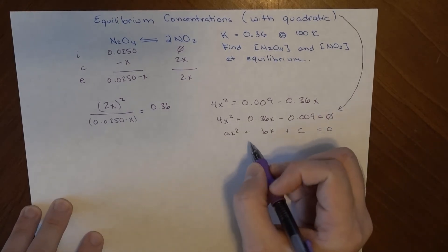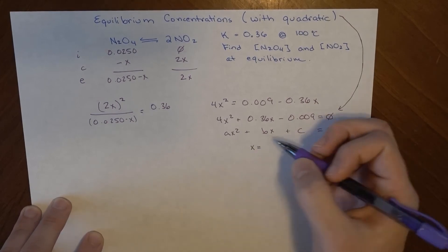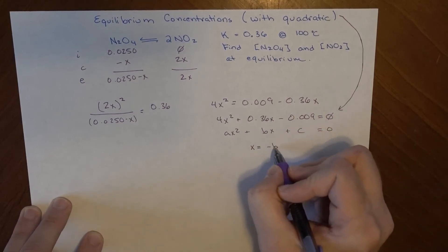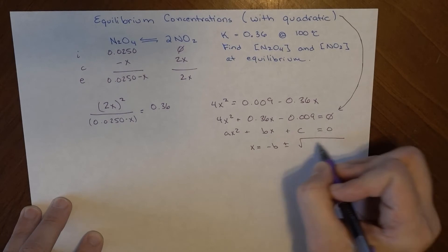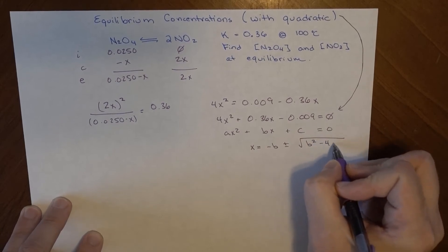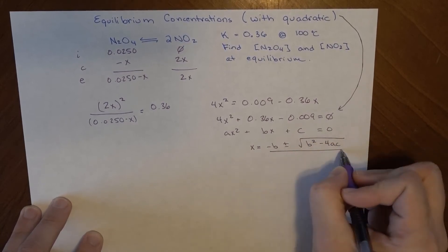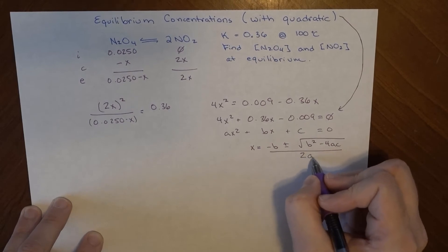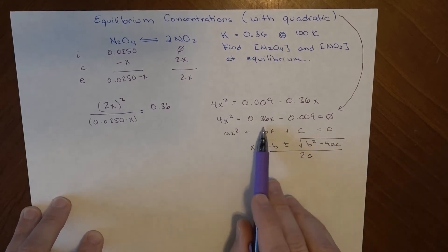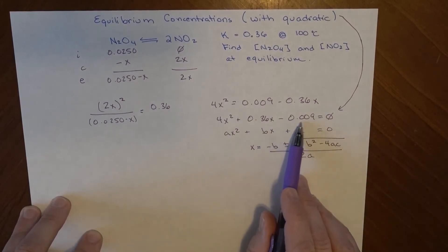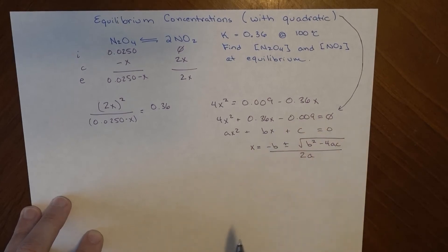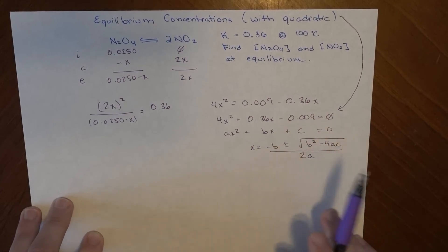The quadratic formula, you might remember, or you might not. x can be solved for in this way: opposite of b plus or minus b squared minus 4ac over 2a. And so these values here for 0.36 and negative 0.009, that negative sign comes with it, get plugged into this.